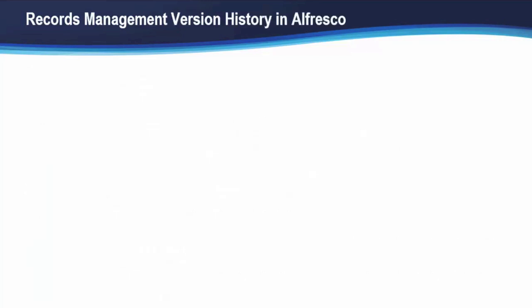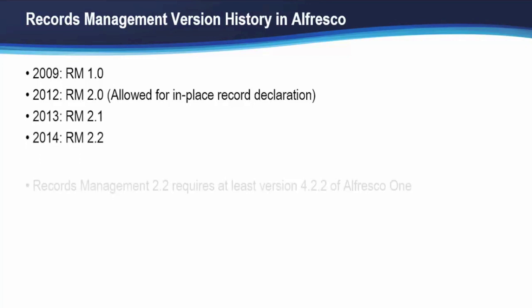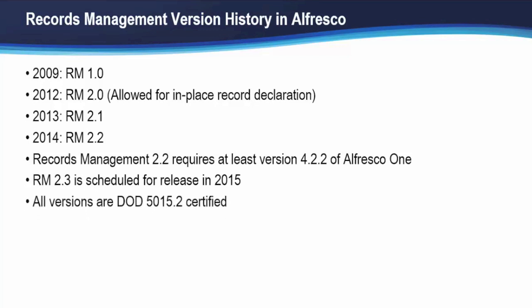Let's briefly go over some version history of records management in Alfresco. The first version was released in 2009, version 1.0. In 2012, version 2.0 was released, which allowed for in-place record declaration. Version 2.1 was released in 2013, followed by 2.2 in 2014. We're going to demonstrate 2.2 today — it requires at least version 4.2.2 of Alfresco. The 2.3 version of RM should be coming out in 2015. All of the above versions are DOD 5015 certified.